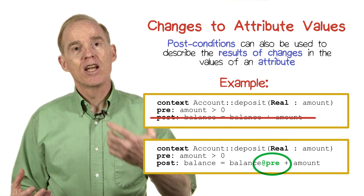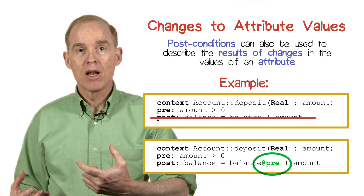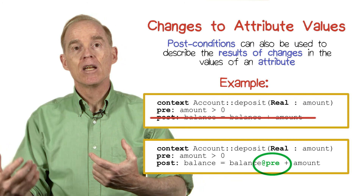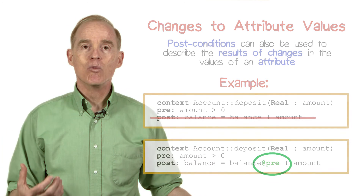That is, we take the previous balance, add in the amount being deposited, and we get the new balance. It looks like an assignment statement, but it's really an equality.